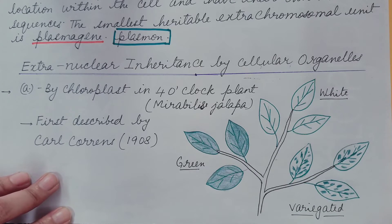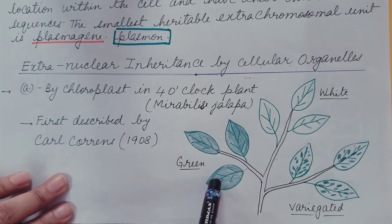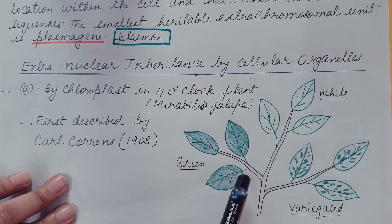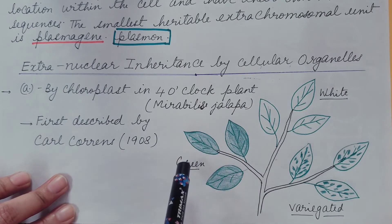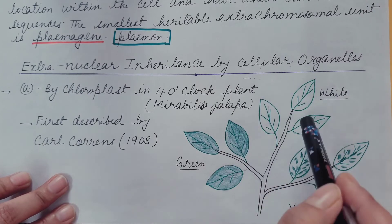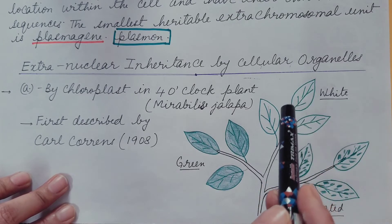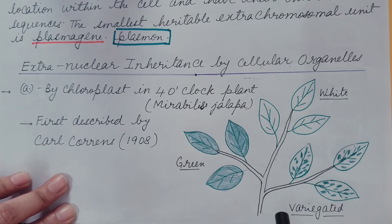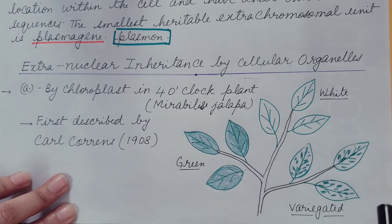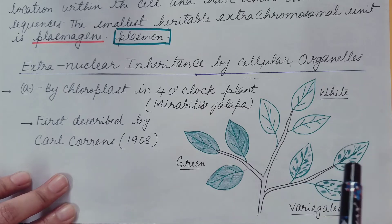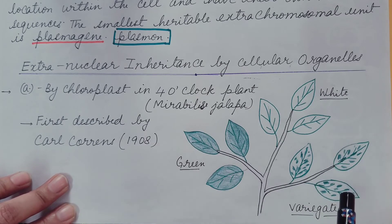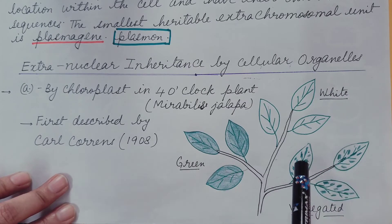Correns showed that seeds obtained from a green branch give green progeny, irrespective of whether pollinated from white, green, or variegated branches. Similarly, seeds from the white branch give only white progeny regardless of the pollen source. Seeds obtained from the variegated branches give all three types of progeny — green, white, and variegated — irrespective of which branch the pollen grains come from to pollinate the female gamete or egg.